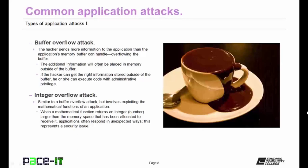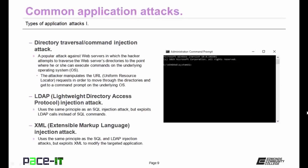An integer overflow attack is similar to a buffer overflow attack but involves exploiting the mathematical functions of an application. When a mathematical function returns an integer larger than the memory space allocated to receive it, applications often respond in unexpected ways, and this represents a security issue. The directory traversal command injection attack is a popular attack against web servers, in which the hacker attempts to traverse the web server's directories to the point where he or she can execute commands on the underlying operating system. The attacker manipulates URL requests in order to move through the directories and get to a command prompt on the underlying OS — once there, they have control.